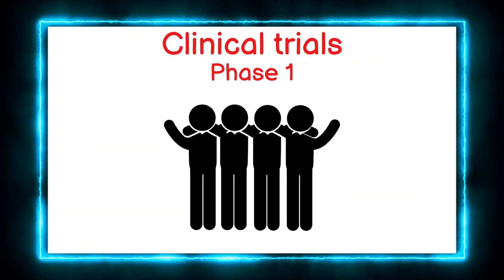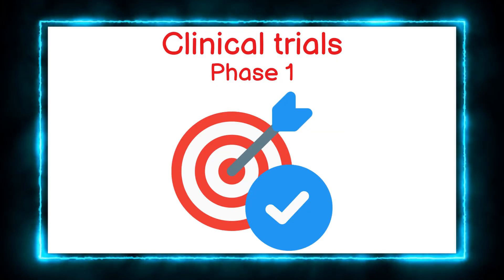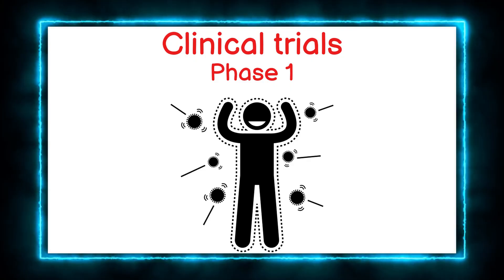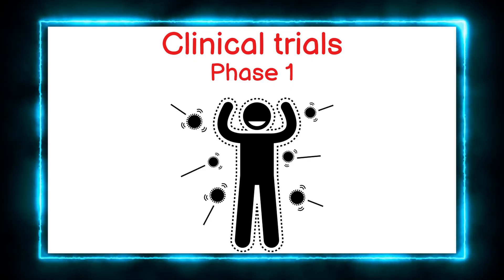Phase 1 usually involves a small group of healthy volunteers. At this stage, the goal isn't to see if the drug works. It's to ensure it's safe and to observe how the body responds to different doses. This is the riskiest phase.